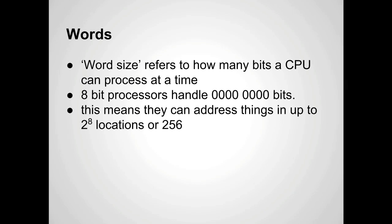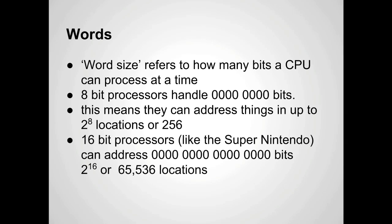An eight-bit processor can address things up to two to the eighth power, or 256 locations. What that means is, in order to access something in memory, the computer needs an address. Each byte of information in RAM gets an address, so an eight-bit processor can only access 256 bytes of information. A 16-bit processor, like the one in the Super Nintendo, can address two to the 16th, or 65,536 locations — significantly more space.